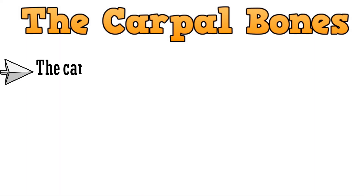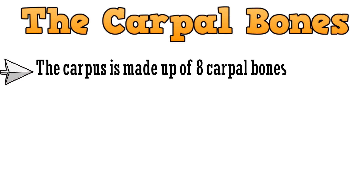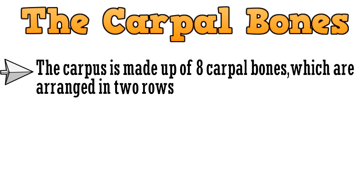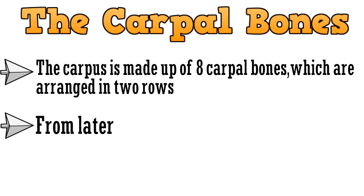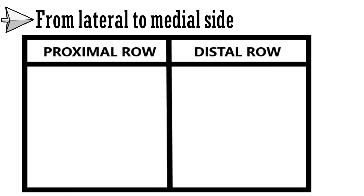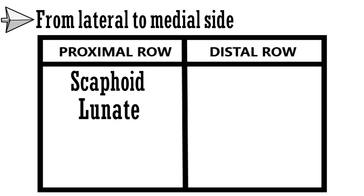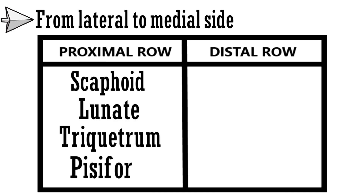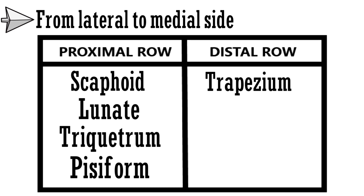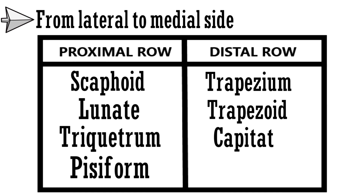Starting with the carpal bones. The carpus is made up of 8 carpal bones, which are arranged in 2 rows from lateral to medial side. The 2 rows are the proximal and the distal row. Bones in the proximal row are scaphoid, lunate, triquetrum, and pisiform. And the bones in the distal row are trapezium, trapezoid, capitate, and hamate.